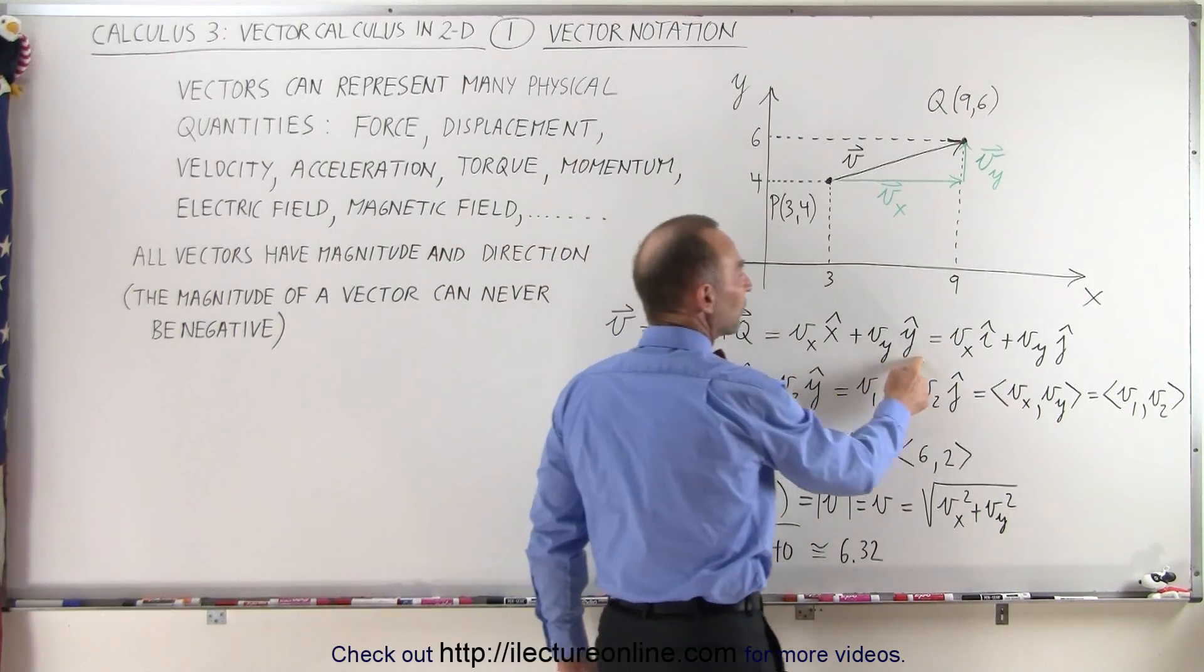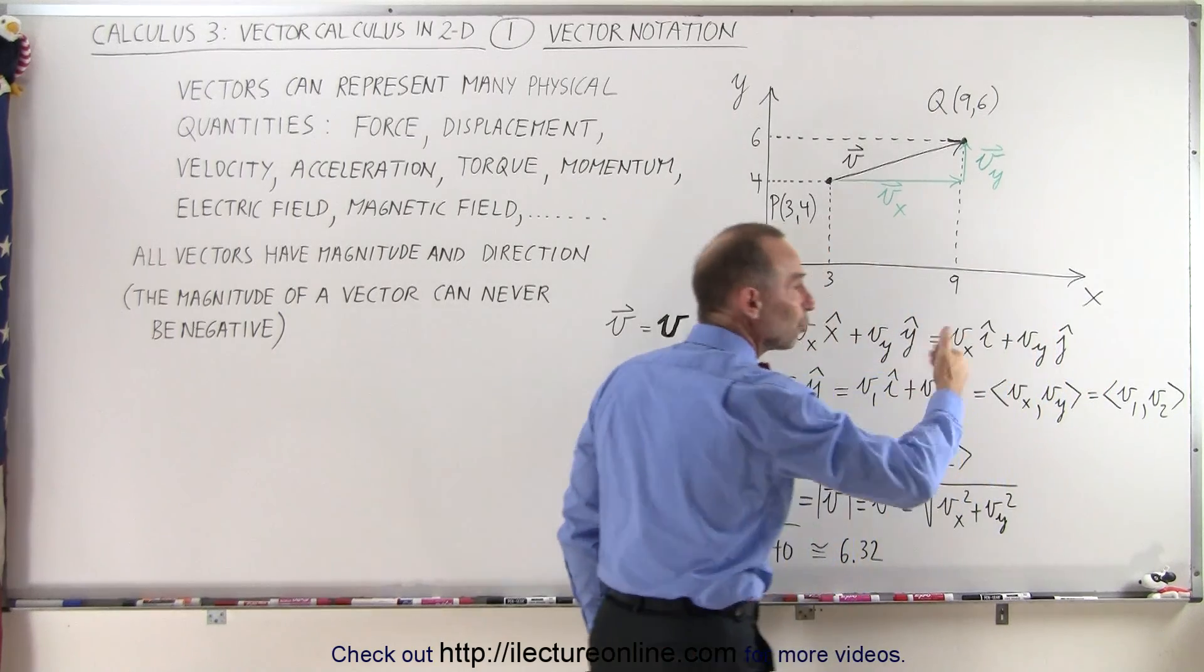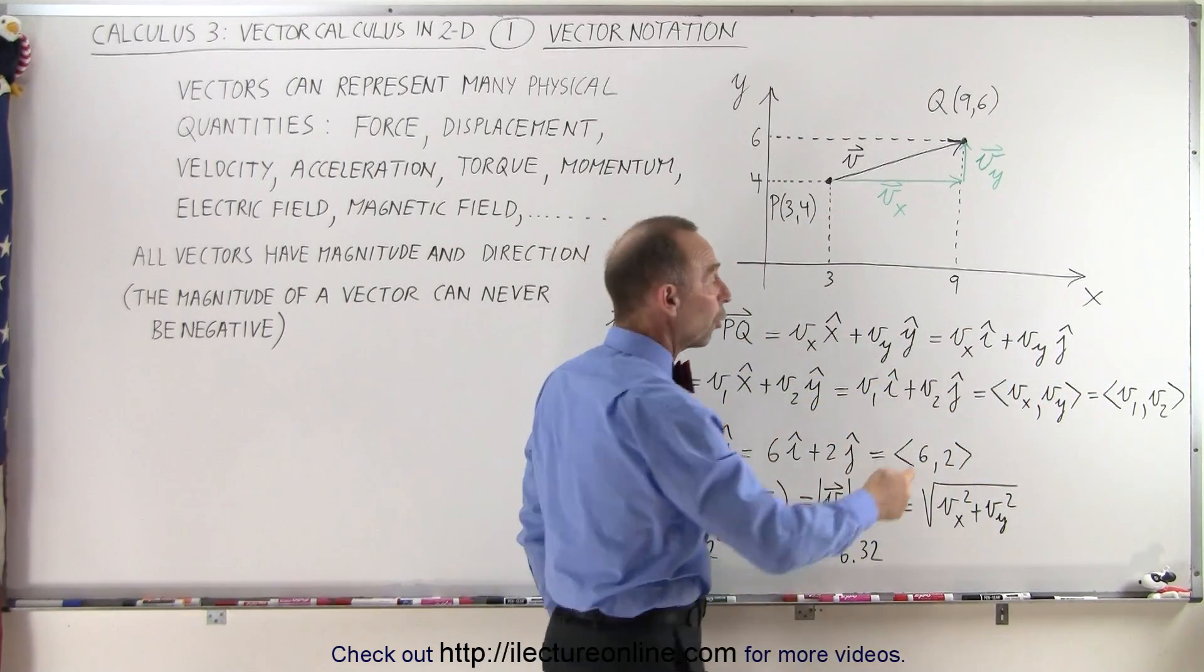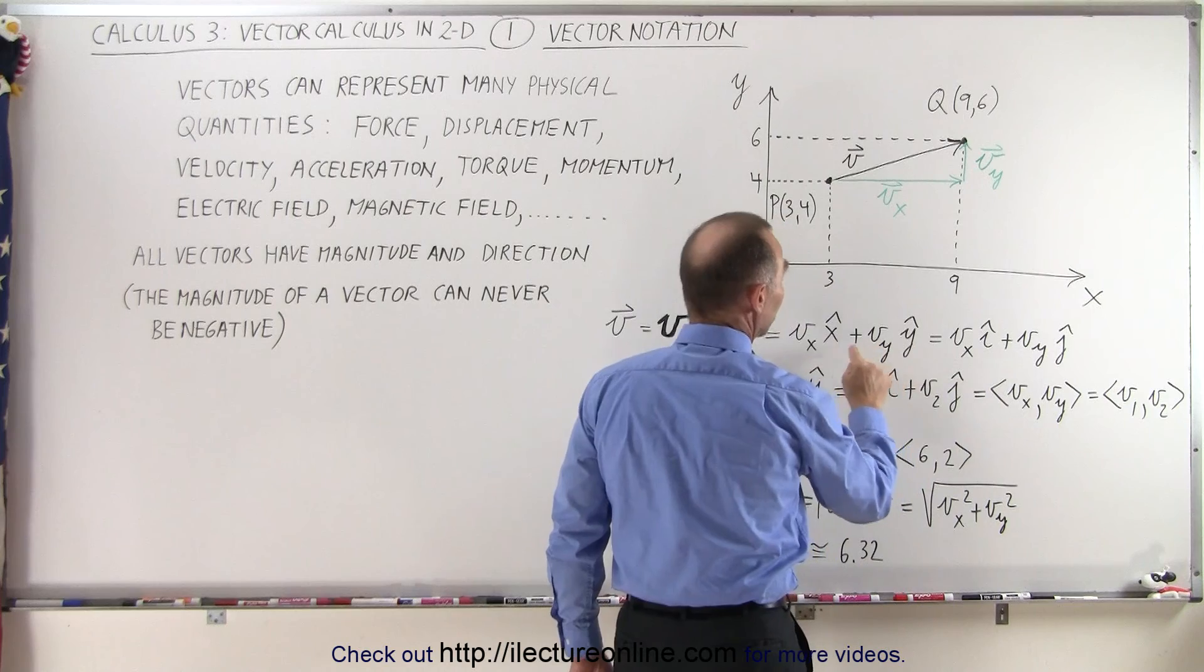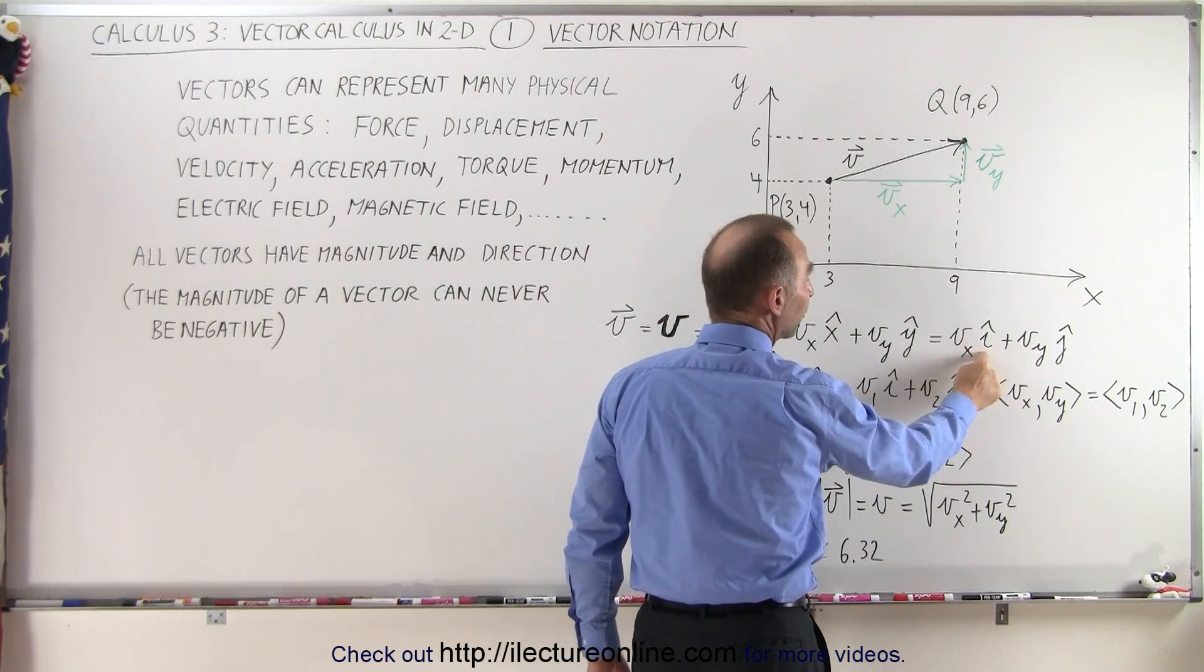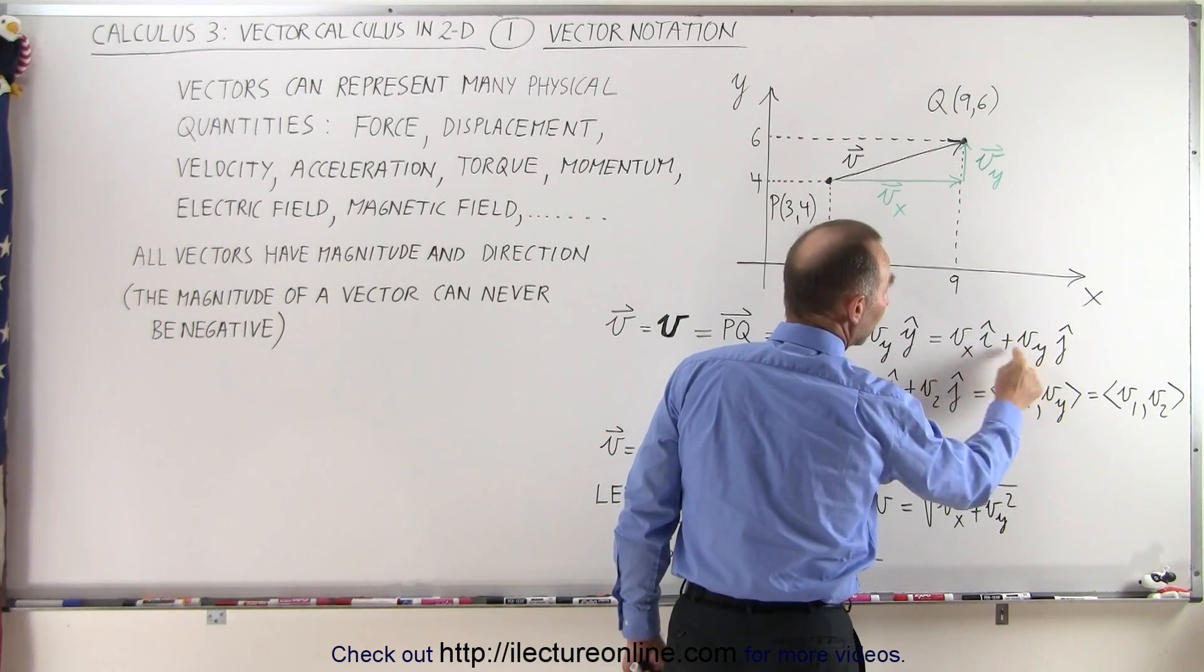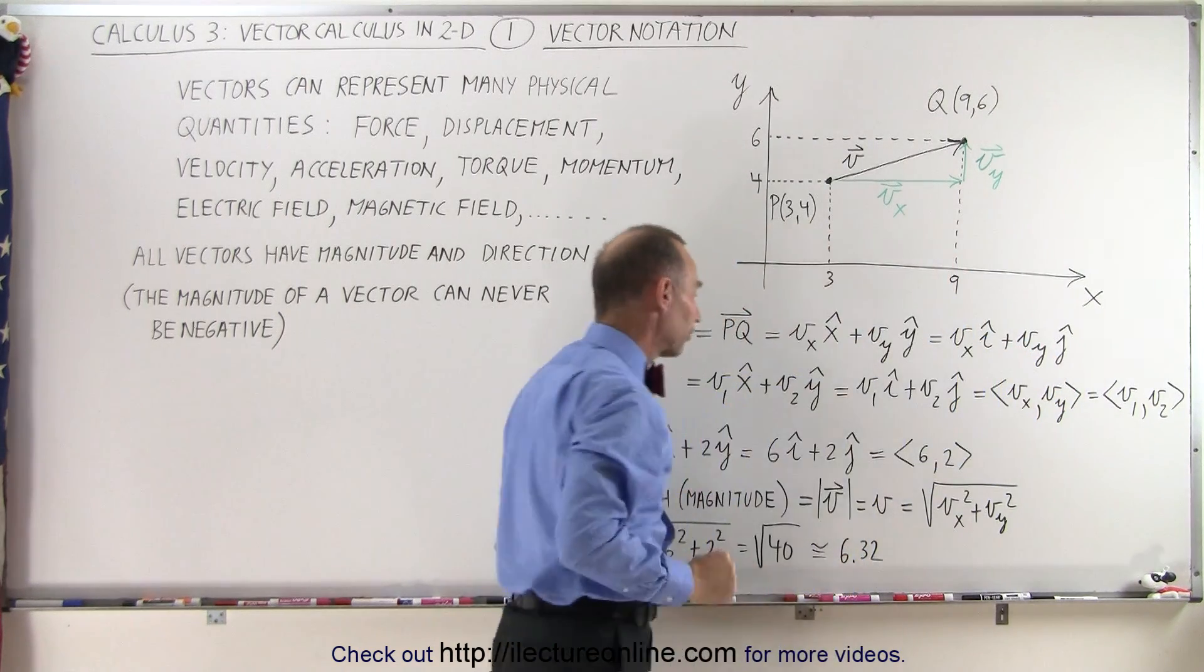Instead of using X and Y, sometimes we use i's and j's. So it would be i, j, k for X, Y, Z direction. These are also unit vectors and they're synonymous to the X with a little hat on them. That simply means a unit vector in the X direction, a unit vector in the Y direction. And these are the X and Y components of the vector V.